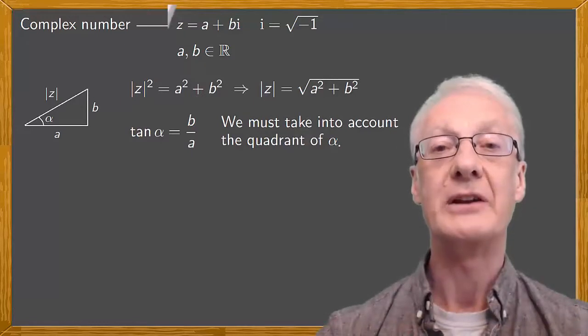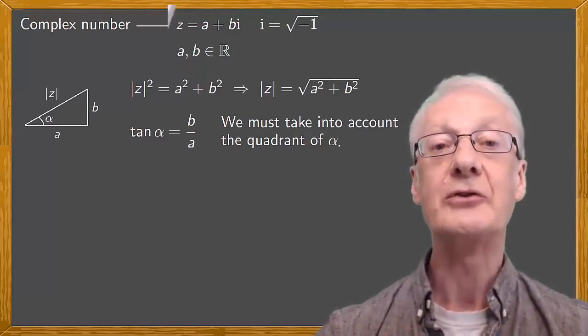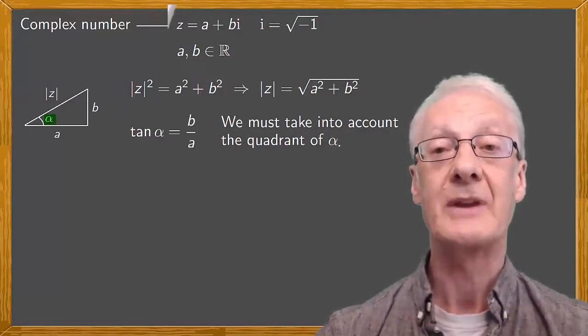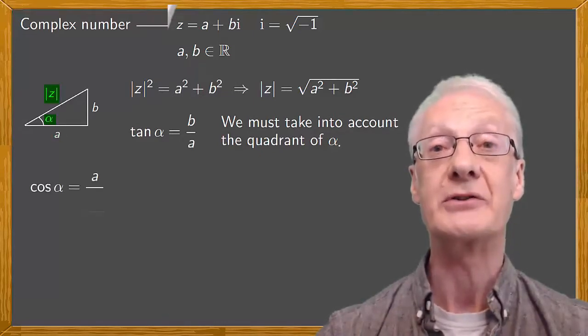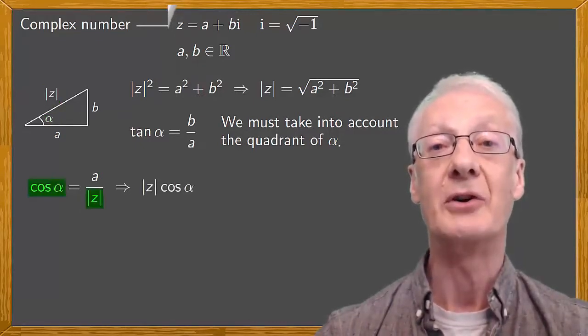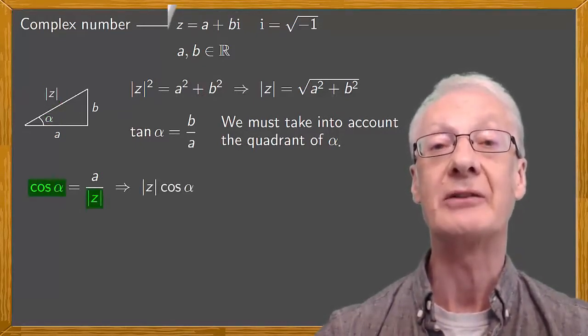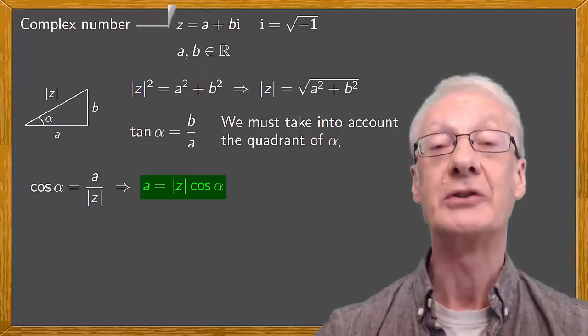Now we go on to obtain the trigonometric form and the polar form. To do this, we calculate the sine and cosine of alpha. The cosine of alpha is the adjacent side a divided by the hypotenuse, which is the modulus of z. Rearranging this, we have that the modulus of z times cosine alpha is equal to a. Or turning this around, a equals the modulus of z times cosine alpha.